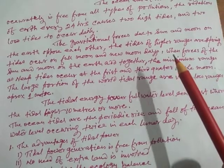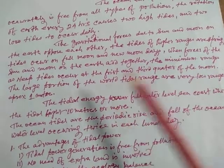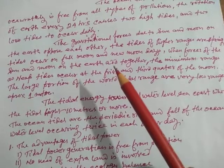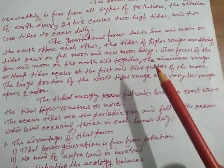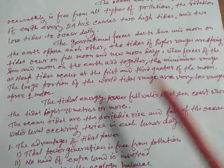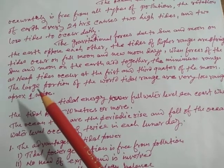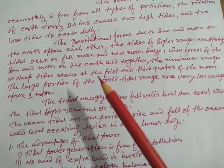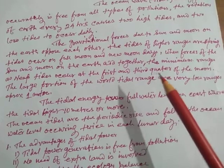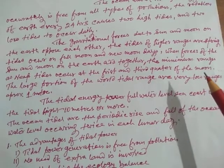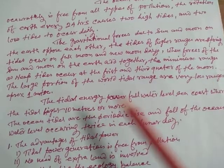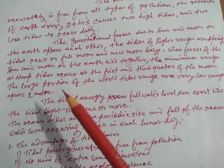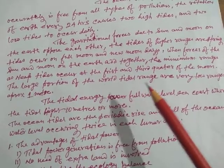The tides of higher ranges are spring tides, which occur on full moon and new moon days when forces of the sun and moon on the Earth add together. The minimum ranges, called neap tides, occur at the first and third quarters of the moon.